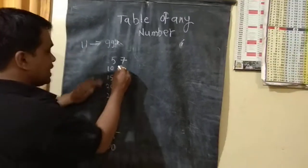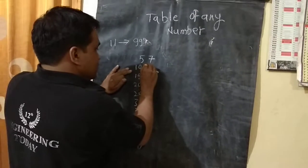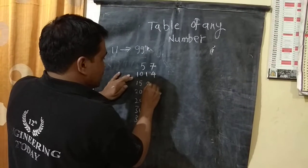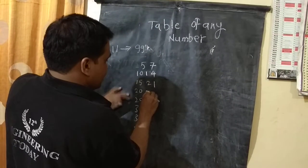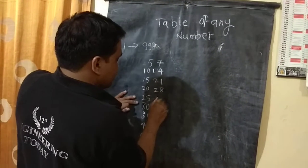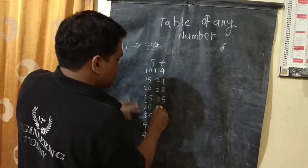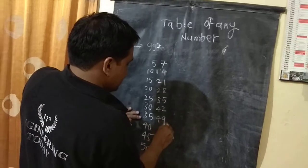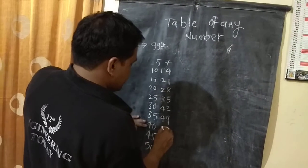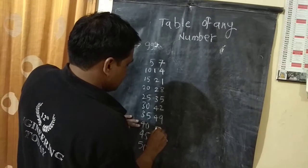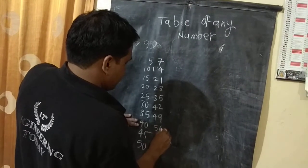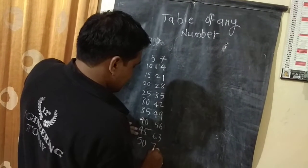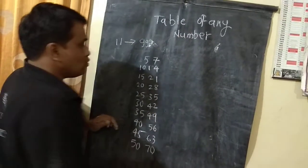And write the table of 7: 7 twos are 14, 21, 28, 35, 42, 49, 56, 63, and 70.